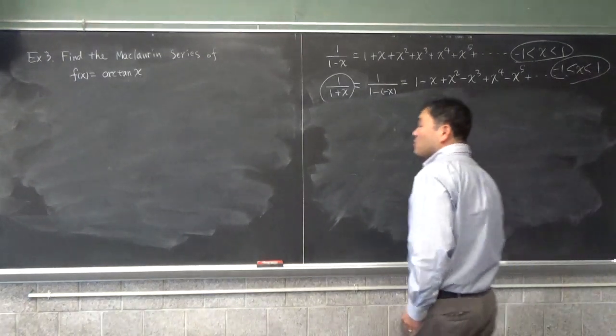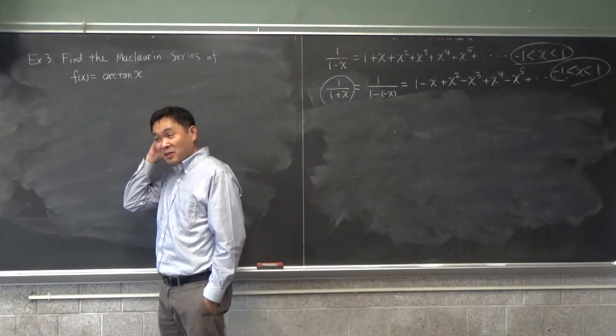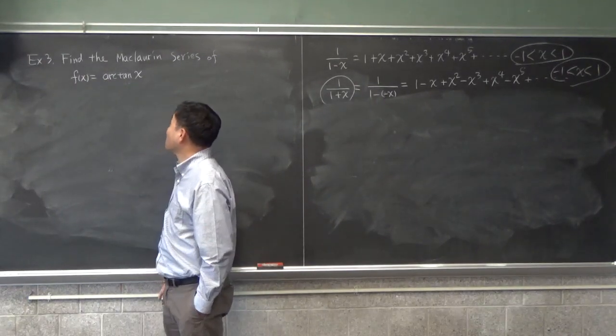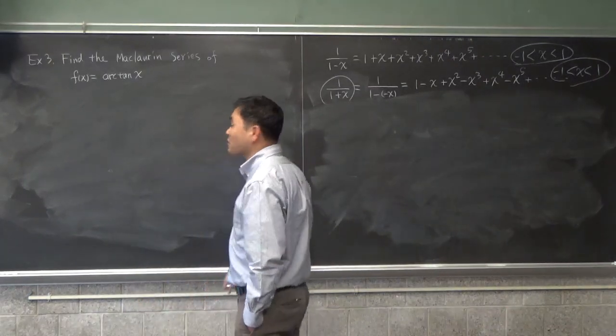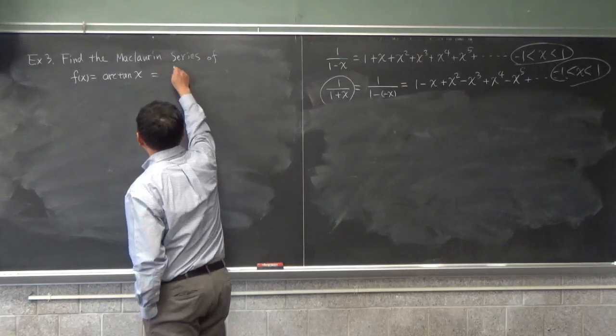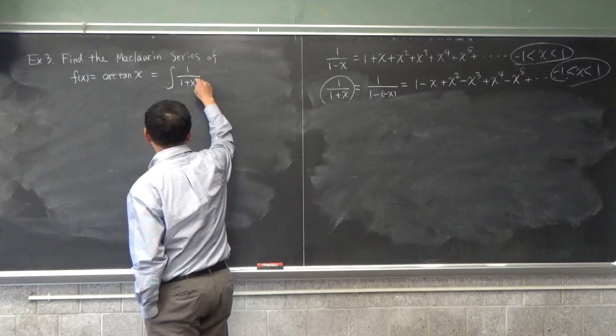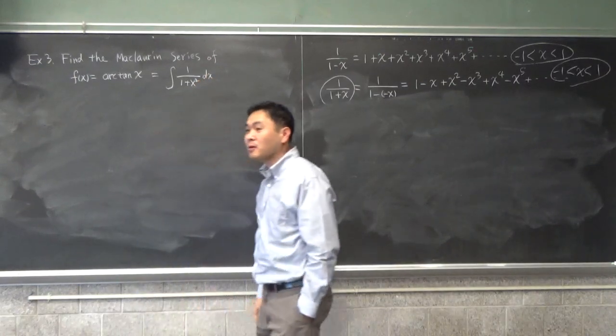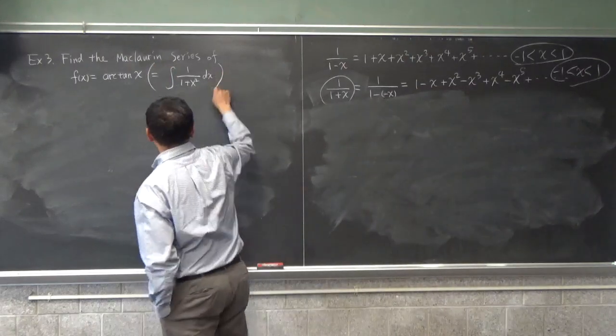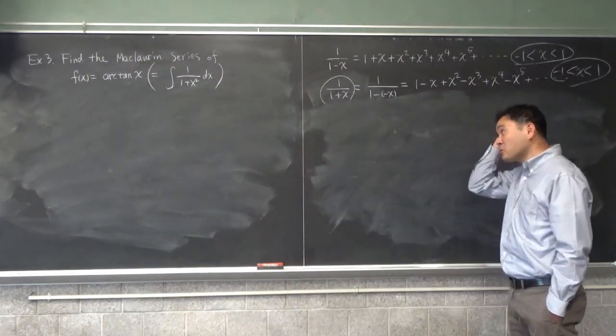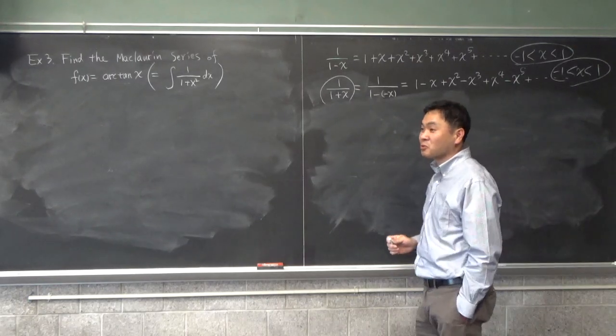Okay, so once you've seen how ln of x plus 1 is obtained, how would you find the Maclaurin series of arctangent of x? So you would integrate it. Integrate what? Right, so this is the integral of 1 over 1 plus x squared dx. That's the idea. But in order to do that, we will need the Maclaurin series of 1 over 1 plus x squared. So what do we do?